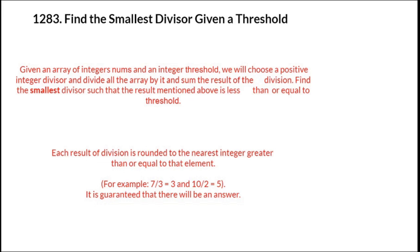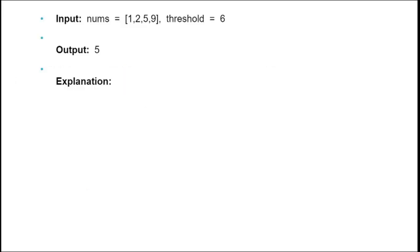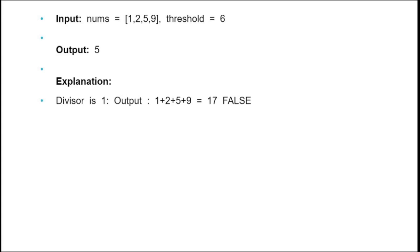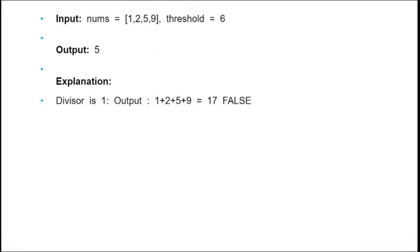Let us understand this with an example. We have an array of [1, 2, 5, 9] and the threshold is 6. If we take divisor 1 and divide every array element: 1÷1=1, 2÷1=2, 5÷1=5, 9÷1=9. The sum is 17, and 17 is greater than 6, which is the threshold. So the condition — sum less than or equal to threshold — is not satisfied.